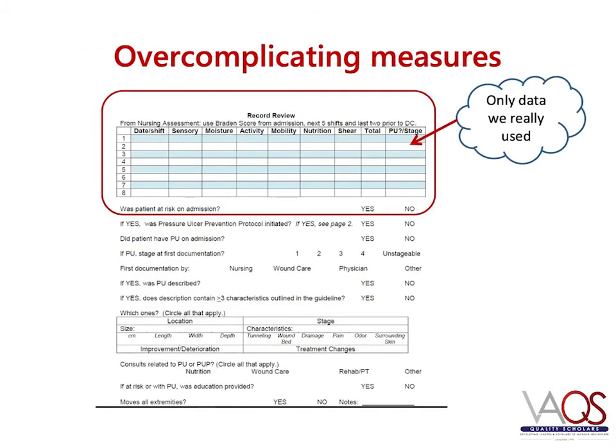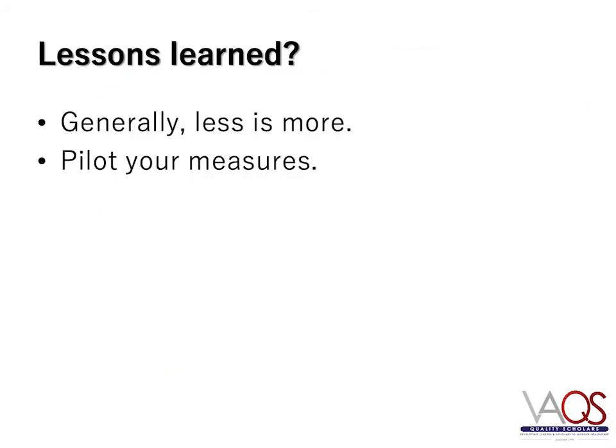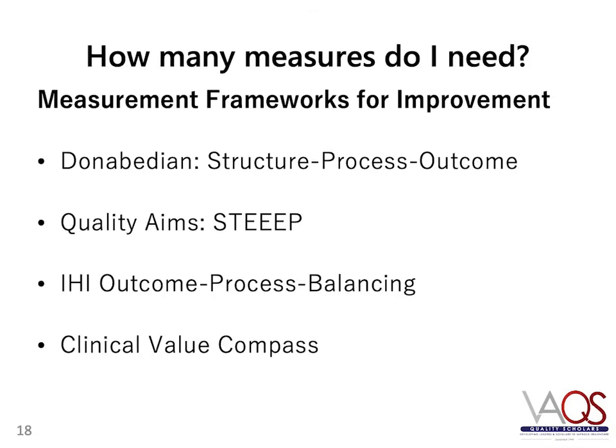During that project, it turned out that the only data we really used was the Braden score, which is a risk assessment for pressure ulcers. So what's the lesson learned? Don't collect data you're not going to use, and pilot your measures and data collection plan before you go full steam ahead on your project.